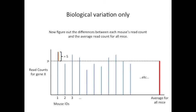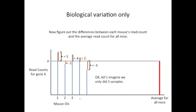In this example, mouse number one has five more reads than the average read count. And mouse number two has one less read than the average. And mouse number three has four more reads than the average. Mouse number four has two more reads than the average. Mouse number five has five fewer reads than the average. Okay, this is getting tiring. Let's imagine we only did five samples.